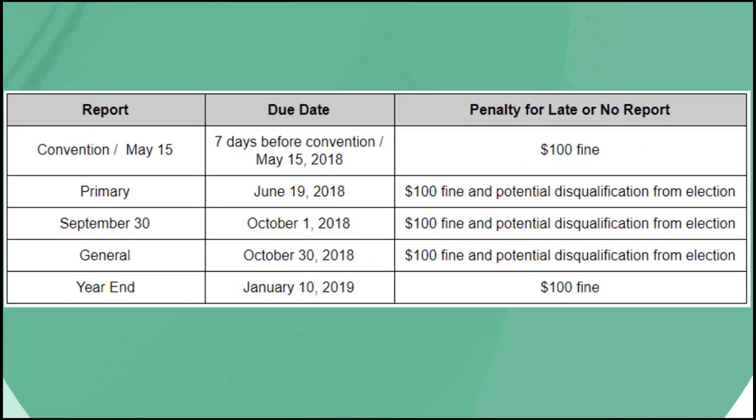Reports themselves also come with associated fines and penalties. Each report is due by 11:59 PM on the deadline. The convention report carries a $100 fine if not filed on time. For the primary, September 30th, and general reports, there is both that fine and a potential disqualification from the election. Our office will send you reminder emails starting 10 days before the report is due and will also call you. We do everything in our power so that you are not disqualified from the election and not fined — if you have any problems as a deadline gets close, call us.